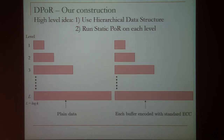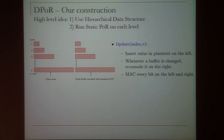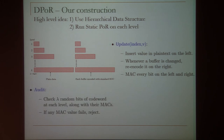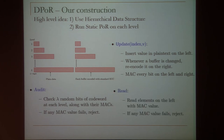At a very high level, we use the same hierarchical data structure as before, but the main idea is that we use a static POR at each level. We have the plain data on one side and the encoded buffer on the other — everything on the left is encoded with a standard error correcting code, which is essentially a static POR. To update, we change the value on the left and then re-encode the appropriate buffers on the right. The audit protocol works by checking lambda positions, lambda bits of the codeword at each level. We also MAC all the data bit by bit, checking those MACs, and if any MAC value fails we reject.